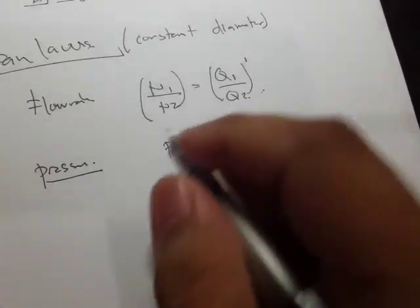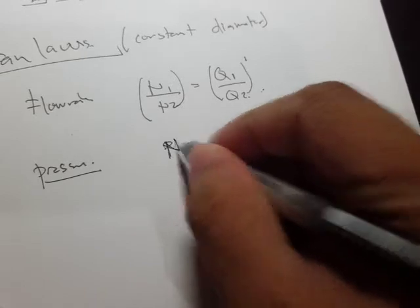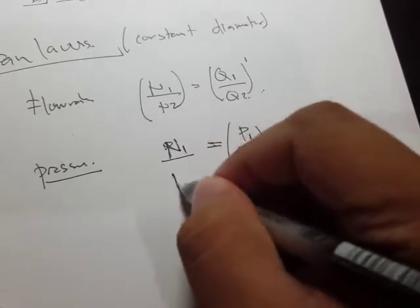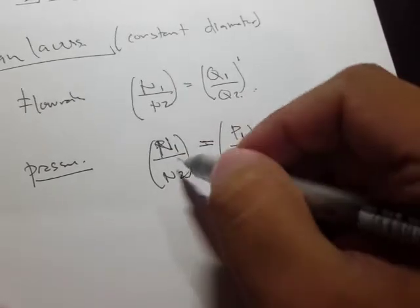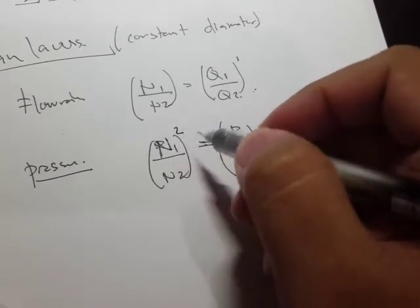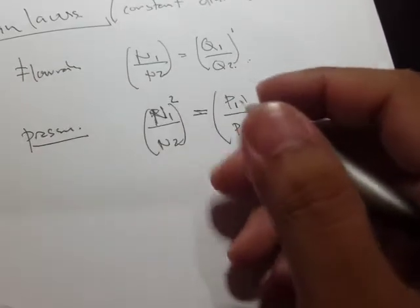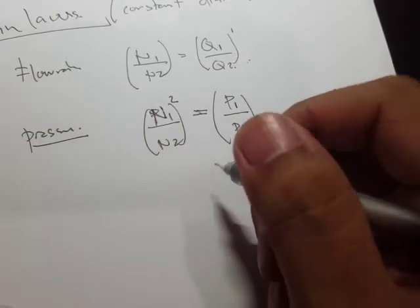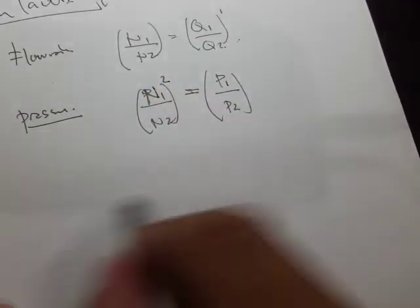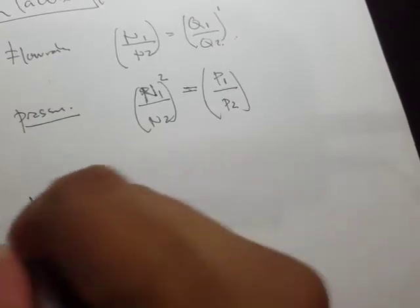For pressure — let's say P₁ over P₂ — the effect is n₁ over n₂, but this time the speed ratio is squared. So the relationship between speed and pressure follows a square law.